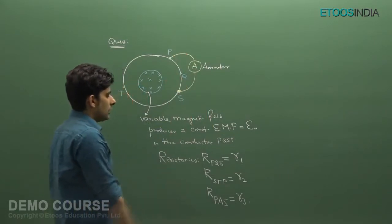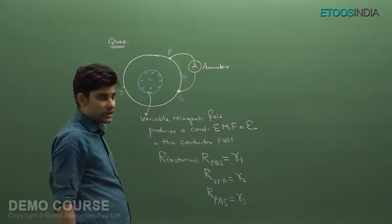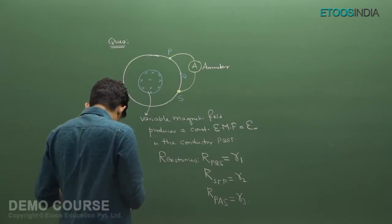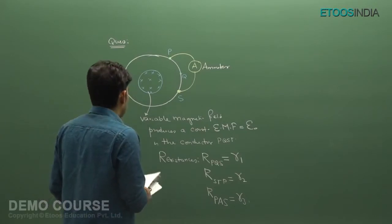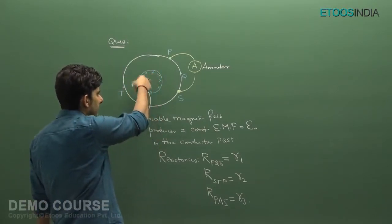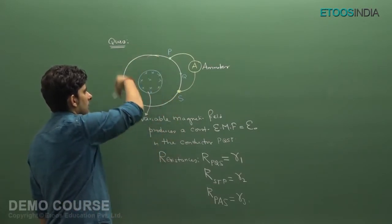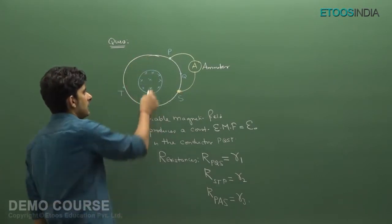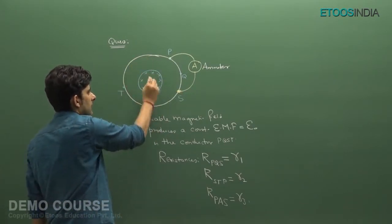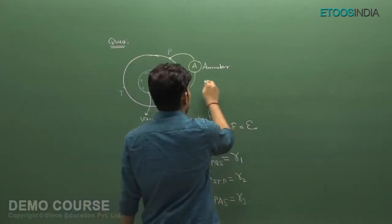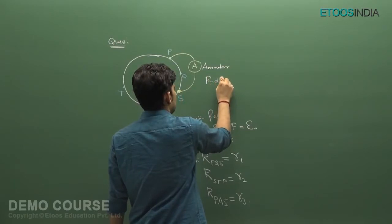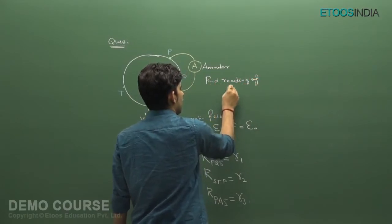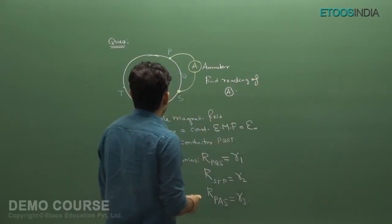Each of the conducting parts has its own resistance as mentioned in the question. What is being asked: the magnetic field is concentrated near the axis of this circular conductor PQSG. Given that, find the reading of the ammeter. What will be the reading of the ammeter in this case?